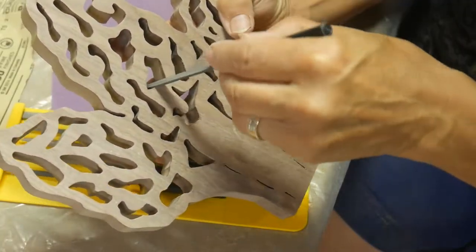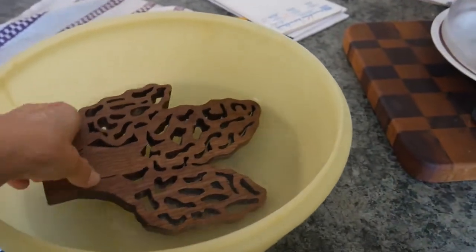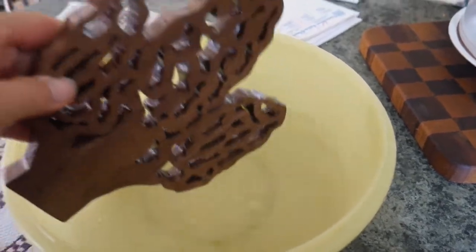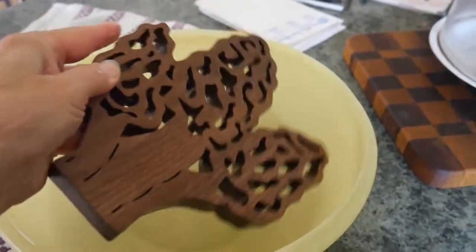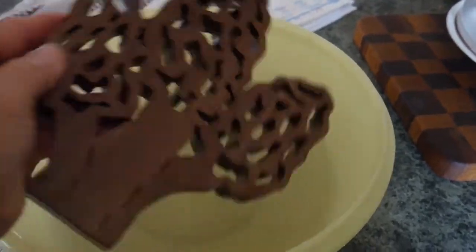Then, when you're done sanding, clean it off a little bit, and you're ready to give it a bath. I take water, and I dip my project in water. And what that does is it raises the grain. After it dries, you do another light sanding, and then you're ready to finish it.